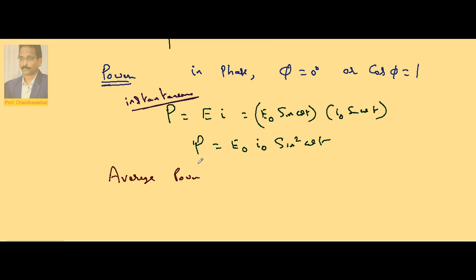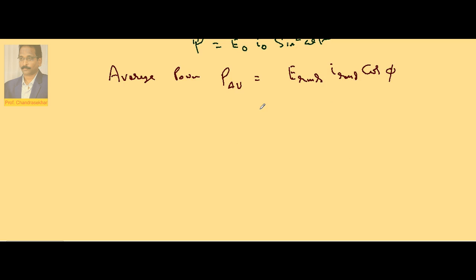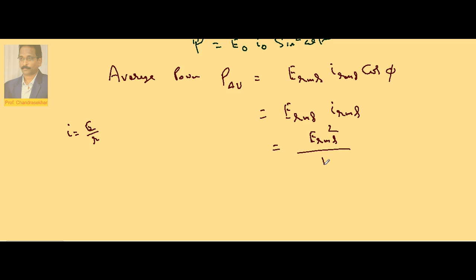The average power is given by P_avg = E_rms × I_rms × cos φ. Since cos φ = 1, P_avg = E_rms × I_rms. Since I = E/R, we have I_rms = E_rms/R, so the average power in a pure resistor connected to an AC source is P_avg = E_rms² / R.